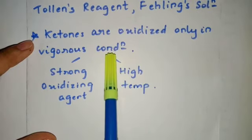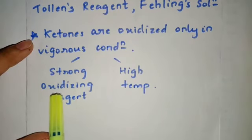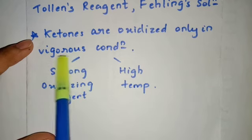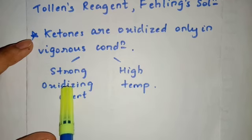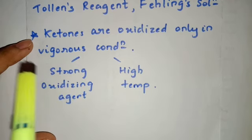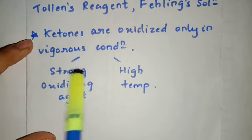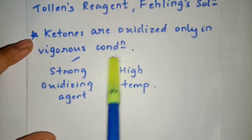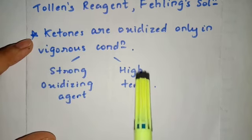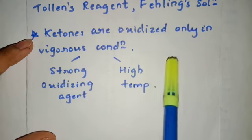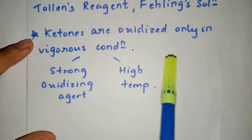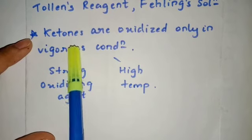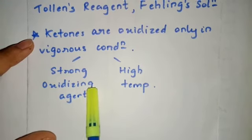For ketones, you need to remember that they are oxidized only in vigorous conditions. The first criteria is that it can be oxidized only with a strong oxidizing agent, because there is no direct hydrogen atom attached on the carbonyl carbon. Second, there should be high temperature. So unlike aldehydes, which can be easily oxidized by mild oxidizing agents, for ketones you need to satisfy these conditions.